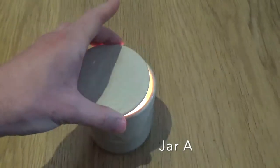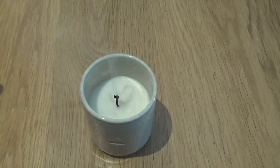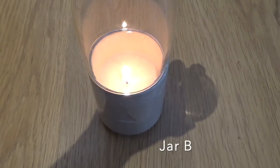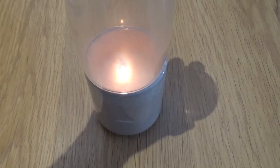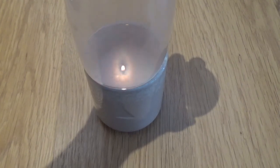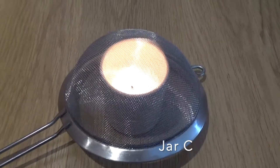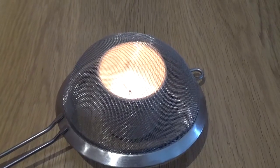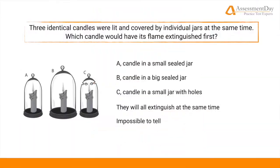This is my recreation of jar A. As you can see, when I place the lid over the top, very quickly the flame is extinguished. This is my recreation of jar B, and slowly but surely the flame will diminish and die out — it has more oxygen to burn through than the previous example, and yet the result is the same. My recreation of jar C — I didn't have a glass with holes, so I'm using a sieve, which still has access to oxygen. As you can see, the flame is still burning and it's not going to go out any time soon. Returning to our question and keeping in mind the examples and the fire triangle, we can clearly see the answer is A: candle in a small sealed jar is the flame that's going to extinguish first.